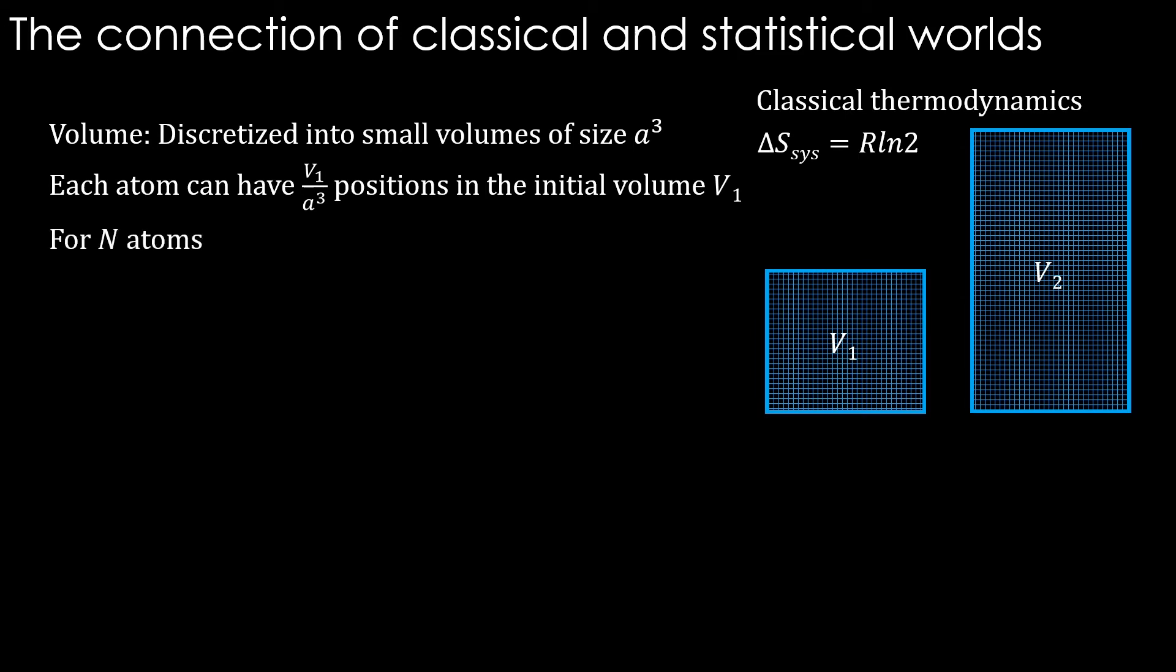The total number of atoms is N, which is the Avogadro number since our gas quantity is 1 mole. For N atoms, we have to multiply this probability N times. Therefore W1 turns out to be this.